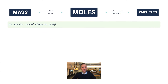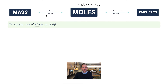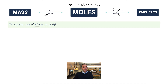Sample problem: what is the mass of 3.00 moles of H₂? We're starting at moles — 3.00 moles of H₂ — and we want to go to mass. Because we're converting between moles and mass, we do not need Avogadro's number; we only need the molar mass. Mass is our unknown.